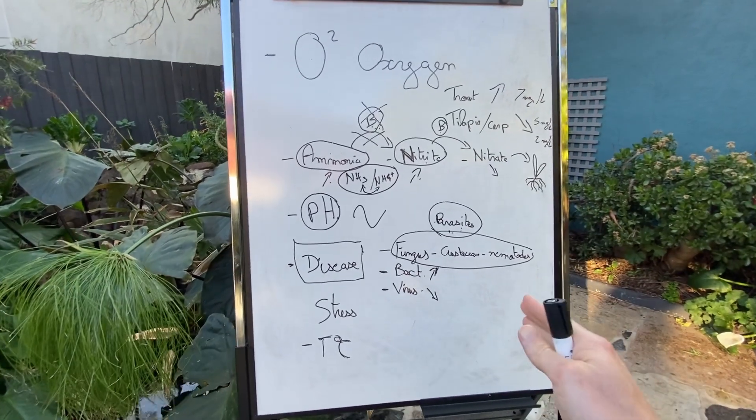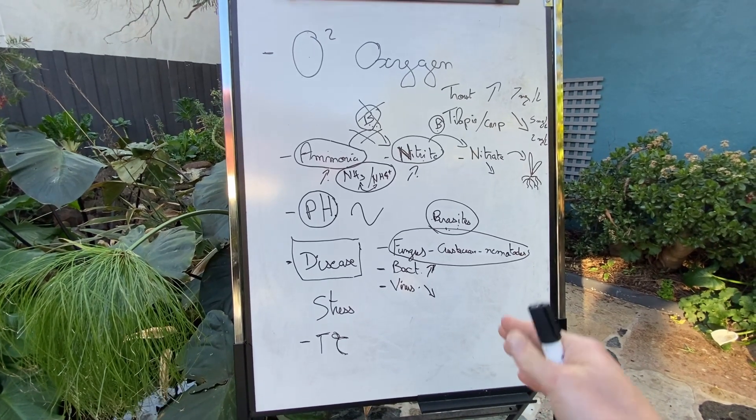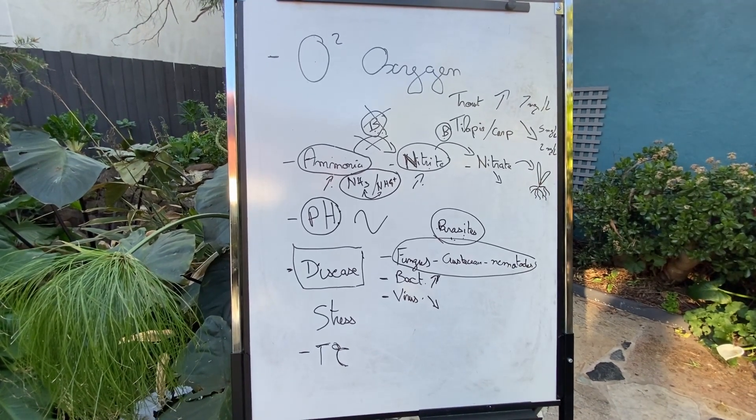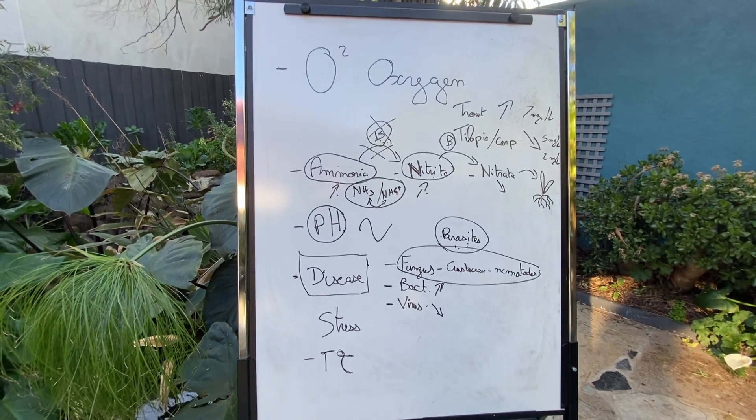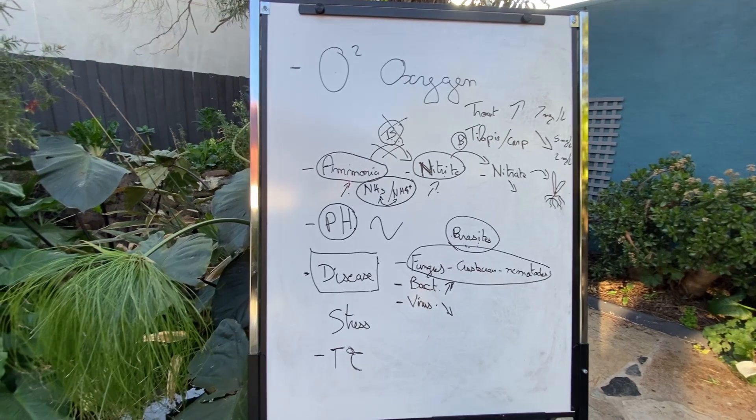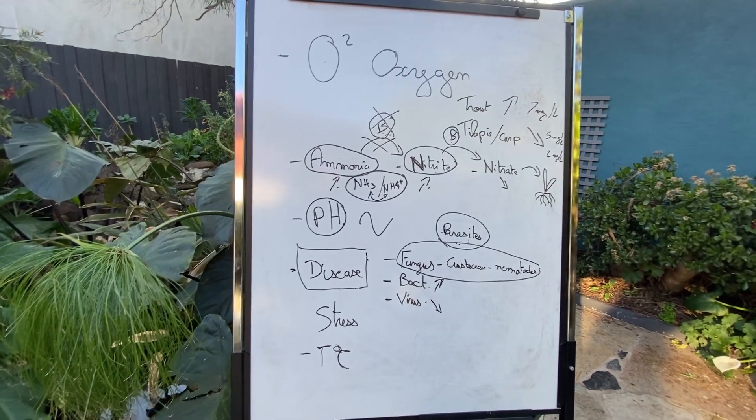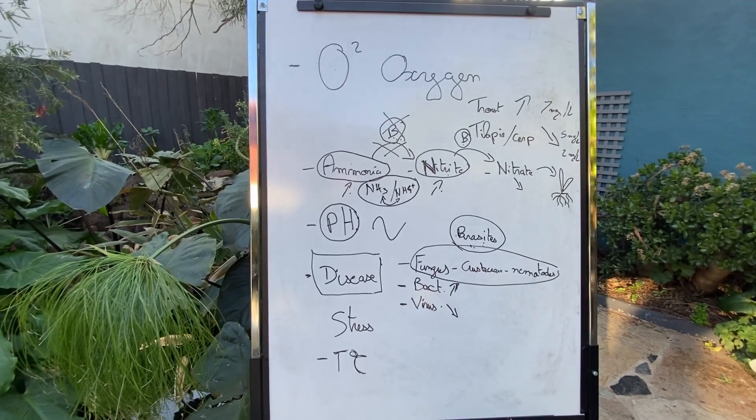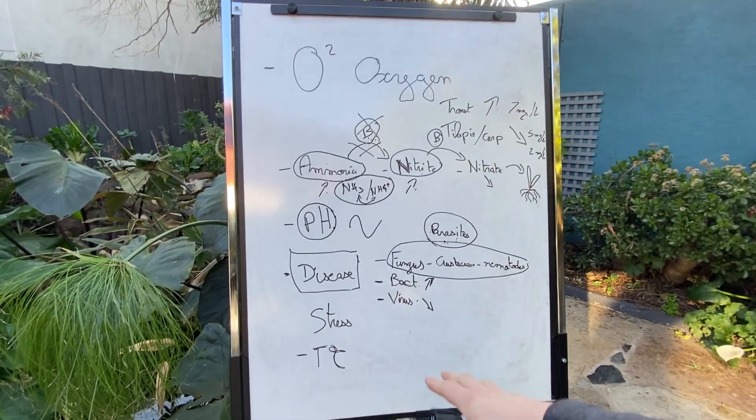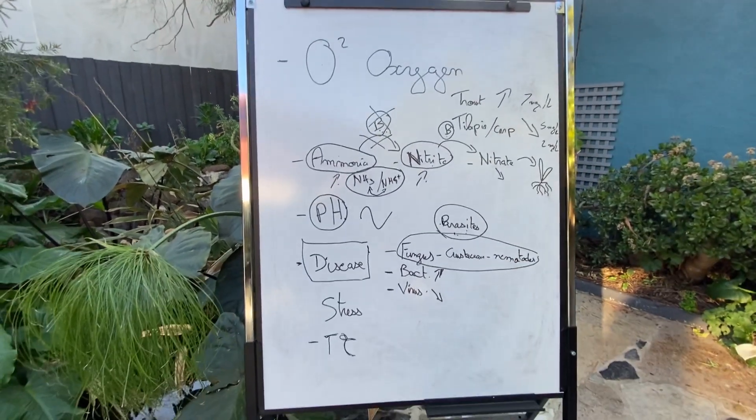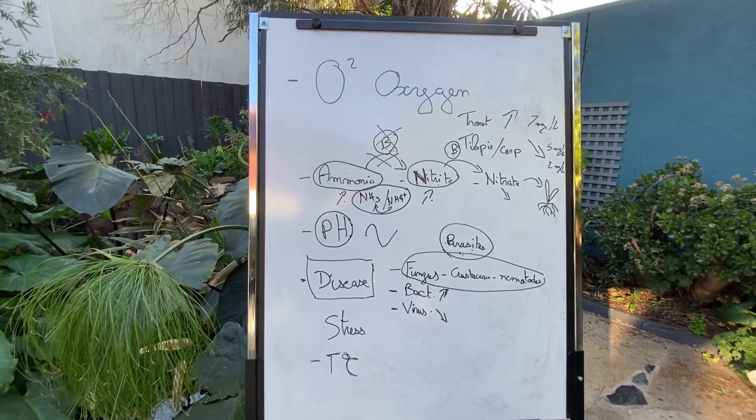It means everything is well designed. You have good ratio between the volume of grow beds, the volume of fish tanks, the quantity of fish, quantity of bacteria. If you follow good recommendation and have a good design, all this is going to be fulfilled and you will not lose your fish.